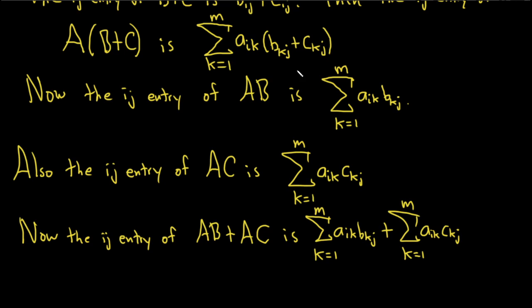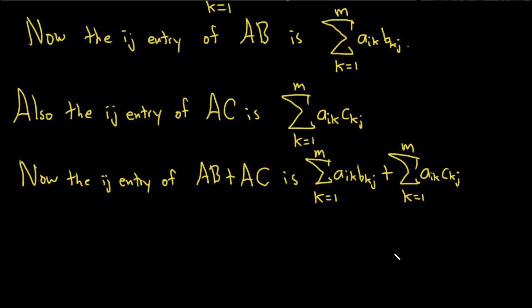And before, we had this one up here. So that's the ij entry of the left-hand side. So now what we can do is we can combine these sums.